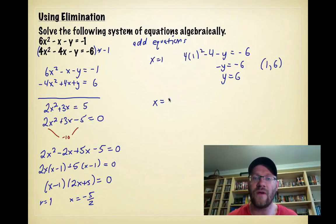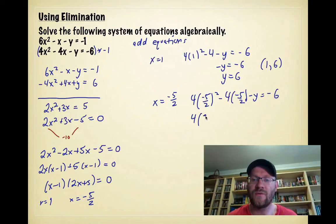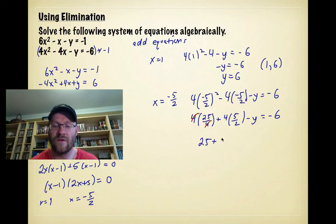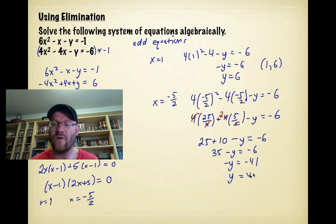For x = −5/2, plugging into the second equation: 4(−5/2)² − 4(−5/2) − y = −6. Squaring gives 25/4, and 4 × 25/4 = 25. The 4's cancel, leaving 25. Then −4 × (−5/2) = 10, so 25 + 10 − y = −6 → 35 − y = −6 → y = 41. The second point is (−5/2, 41).